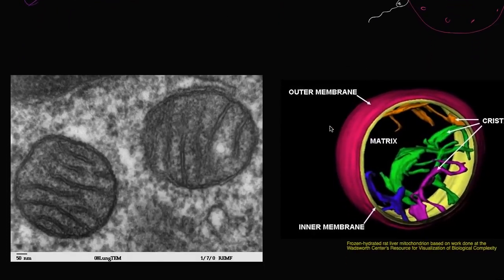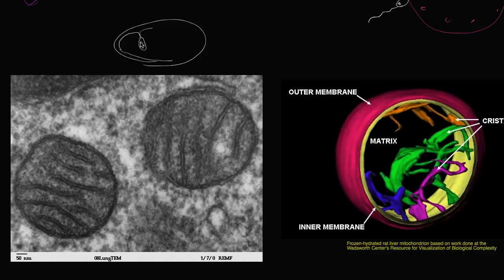Something more like the cristae junction model is now accepted — where the inner membrane has these little tunnels connecting to the space inside the cristae. I want you to appreciate that in biology, you read something in a textbook and think people have figured all this out, but people are still thinking about how these structures work and what their actual structure is — and how it lets this fascinating organelle do all of the things that it needs to do.